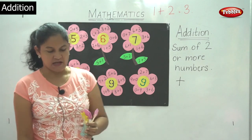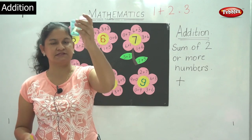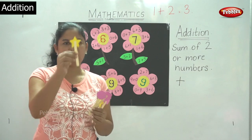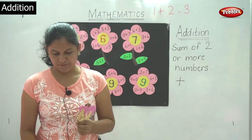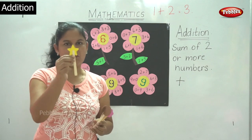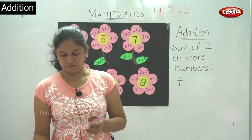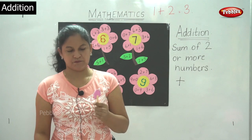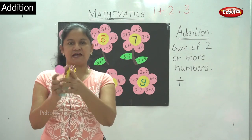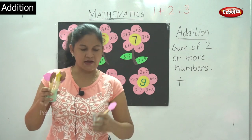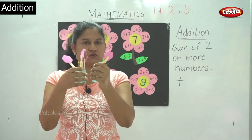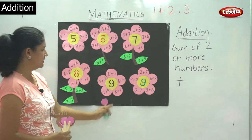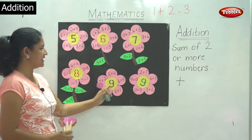Next I am placing 1 ice cream in this cup and 8 ice creams in the other cup: 1, 2, 3, 4, 5, 6, 7, 8. So I have 8 ice creams in one cup and 1 ice cream in the other. So 8 plus 1 gives me 9 or 1 plus 8 gives me 9.